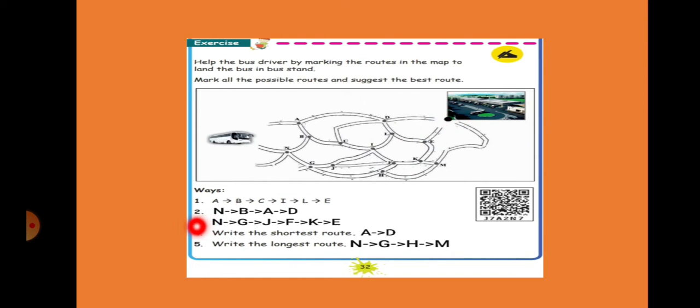Now we have to write the second one. So N, from N to B, B to A, A to D, and it will go like this. Otherwise N, G, J, F, K, E, like this.